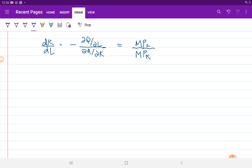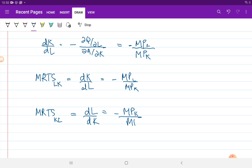So, in conclusion, I can write that the marginal rate of technical substitution of labor for capital is dK/dL, which is equal to minus MPL/MPK. Similarly, the marginal rate of technical substitution of capital for labor will be written as dL/dK which is minus MPK/MPL.